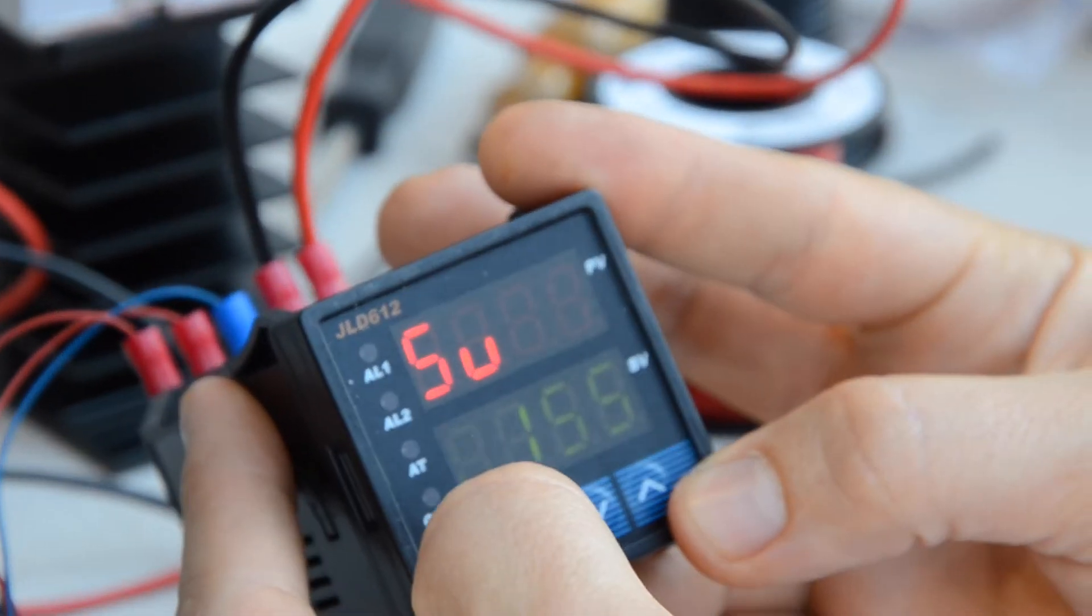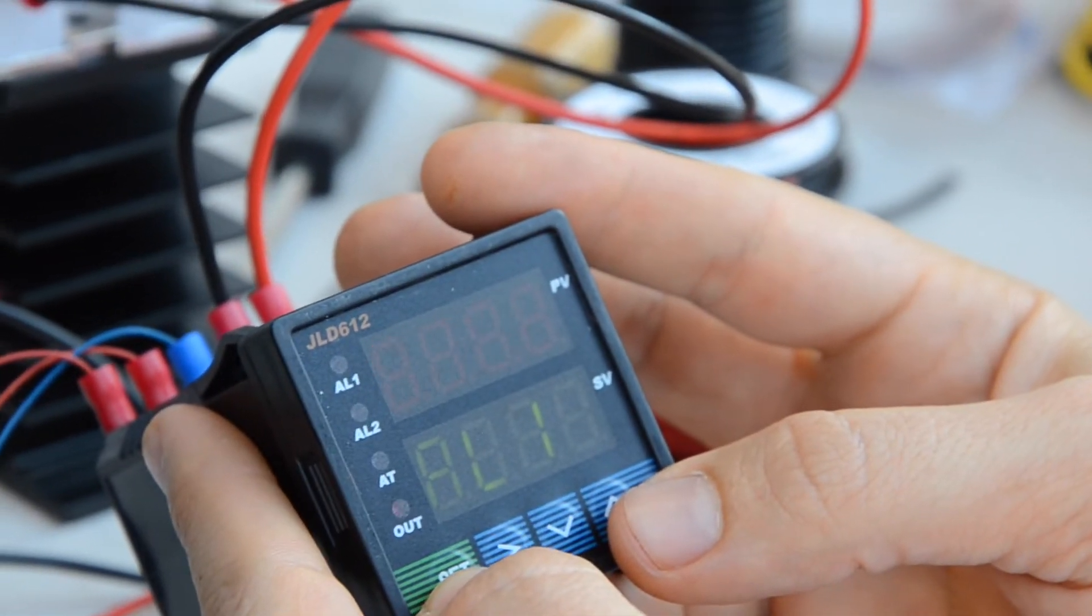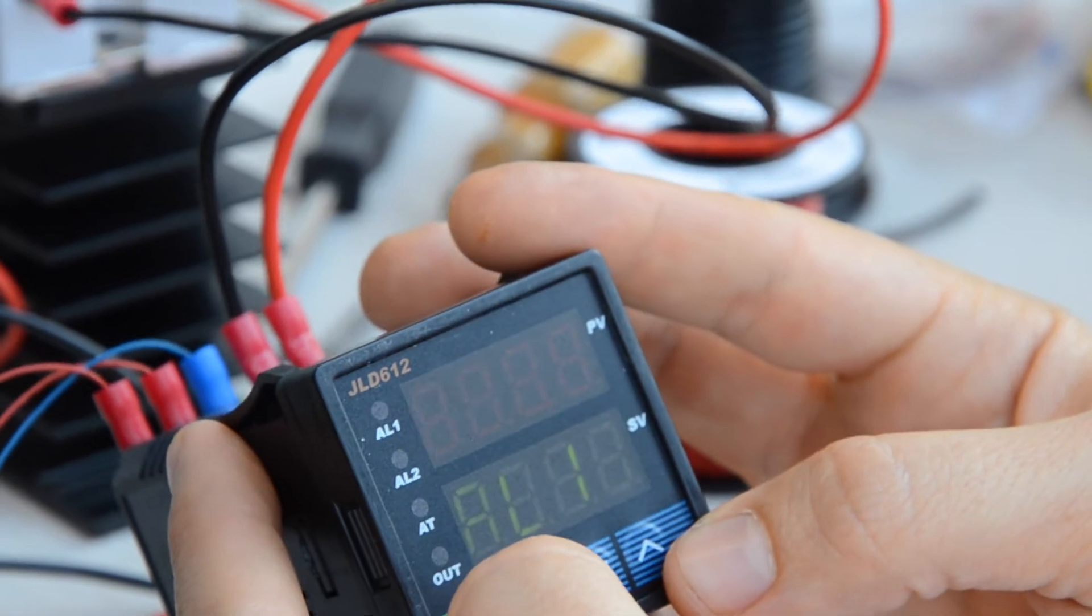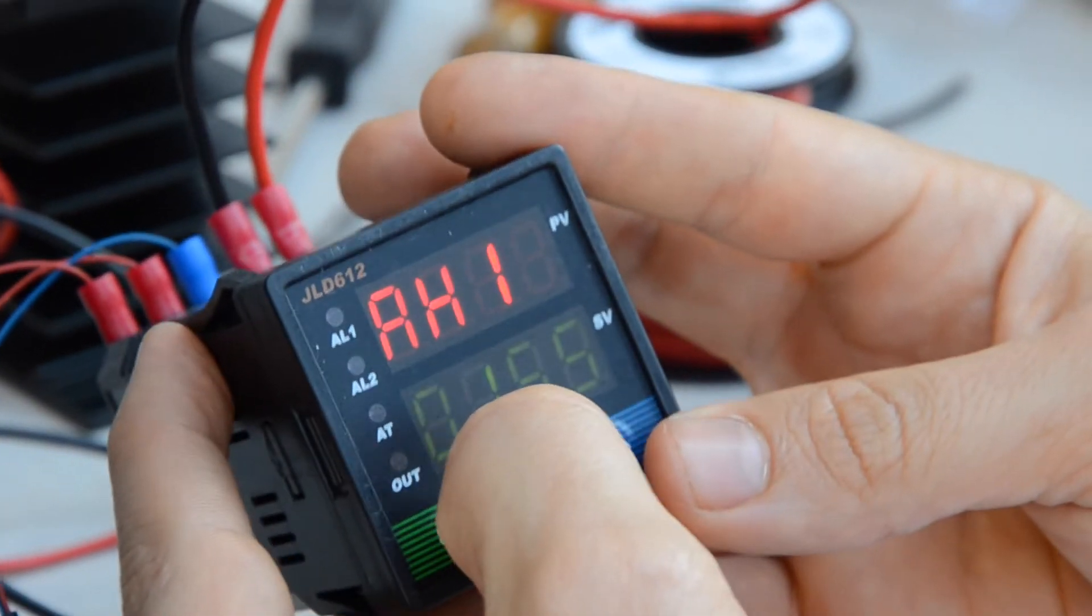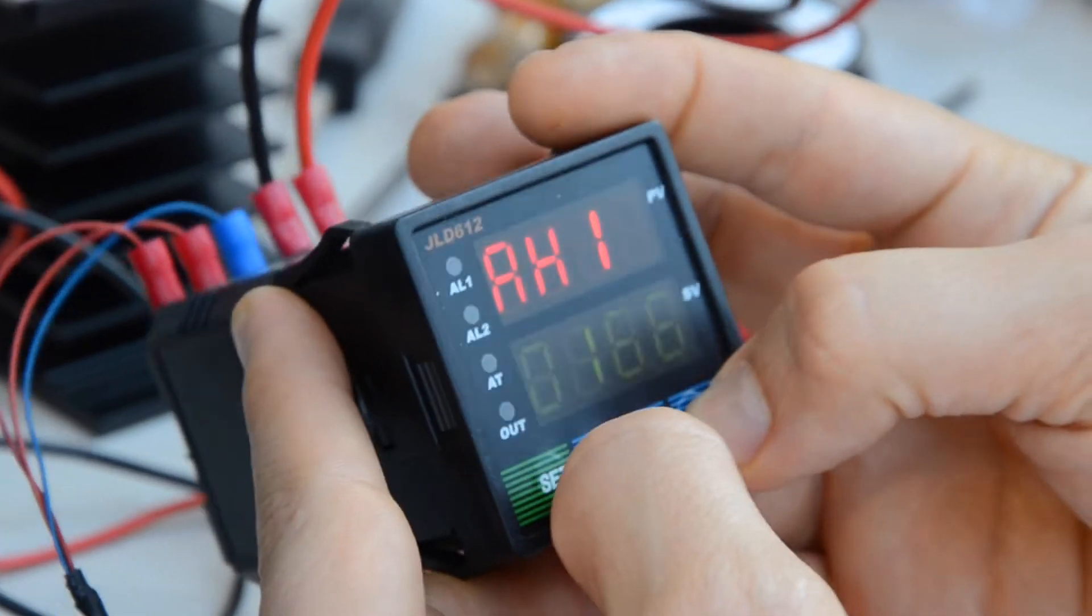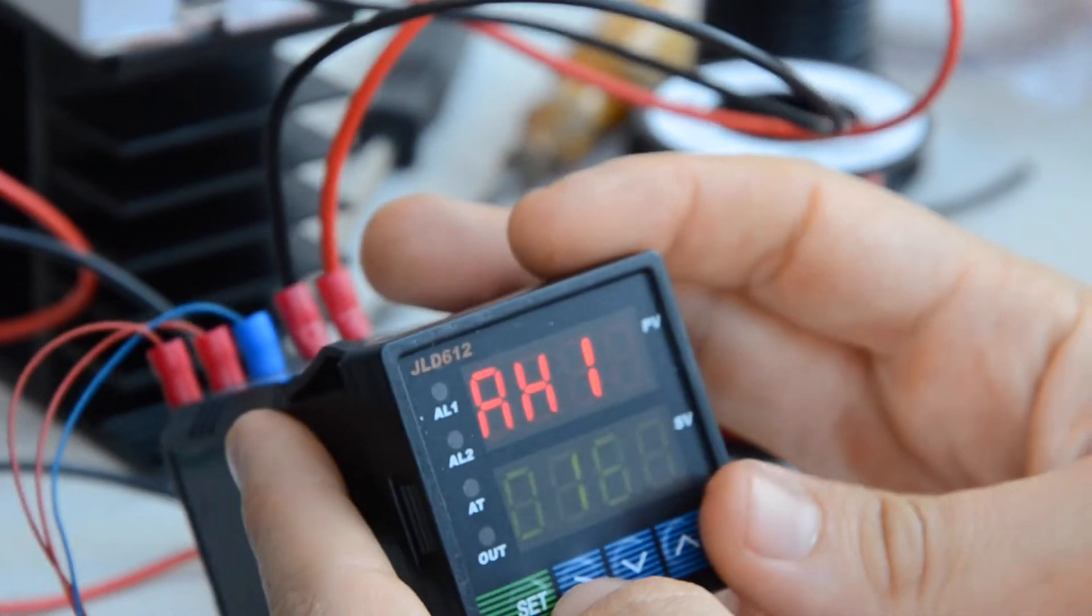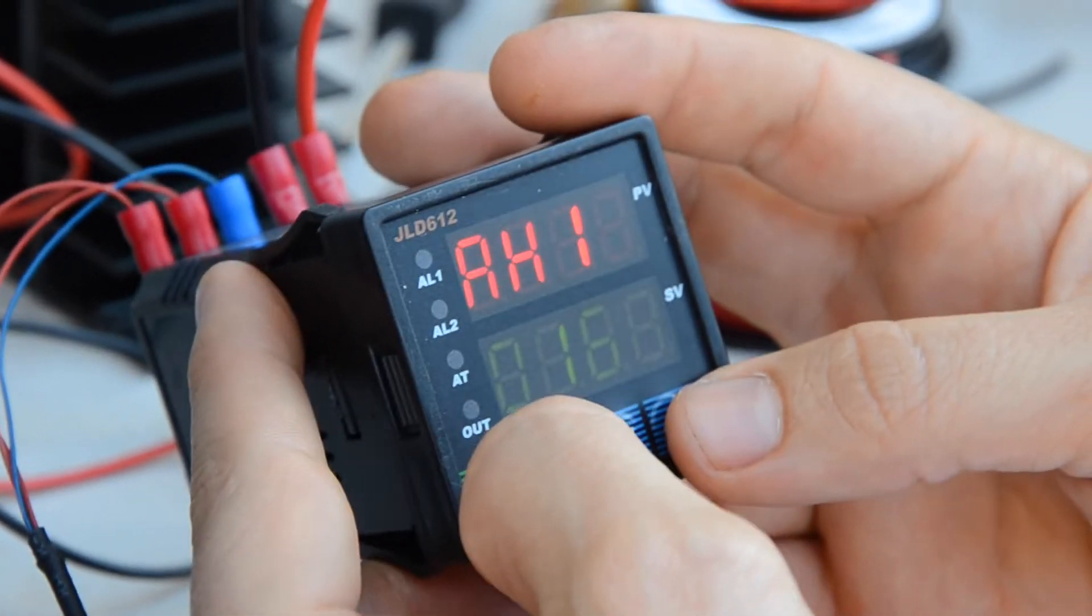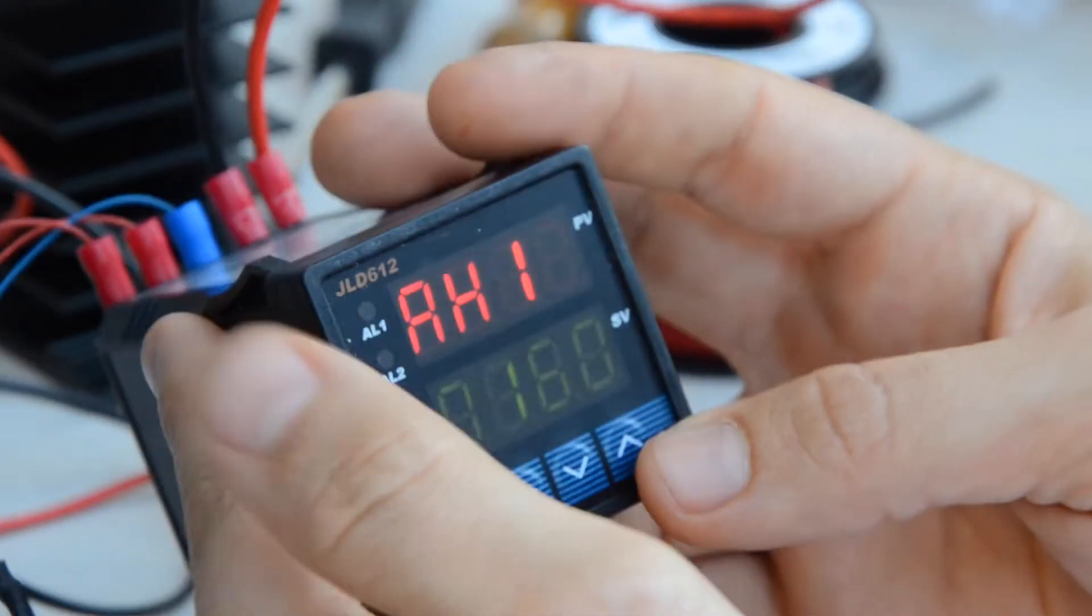It's already set, so I'm going to go ahead and OK that one. Then the next setting we're going to do is the first high alarm. I'm actually going to lower this one down to 160. So that means that if the temperature goes above 160, it'll actually put out a little buzzer alarm, which we may or may not necessarily even need once this thing gets tuned.